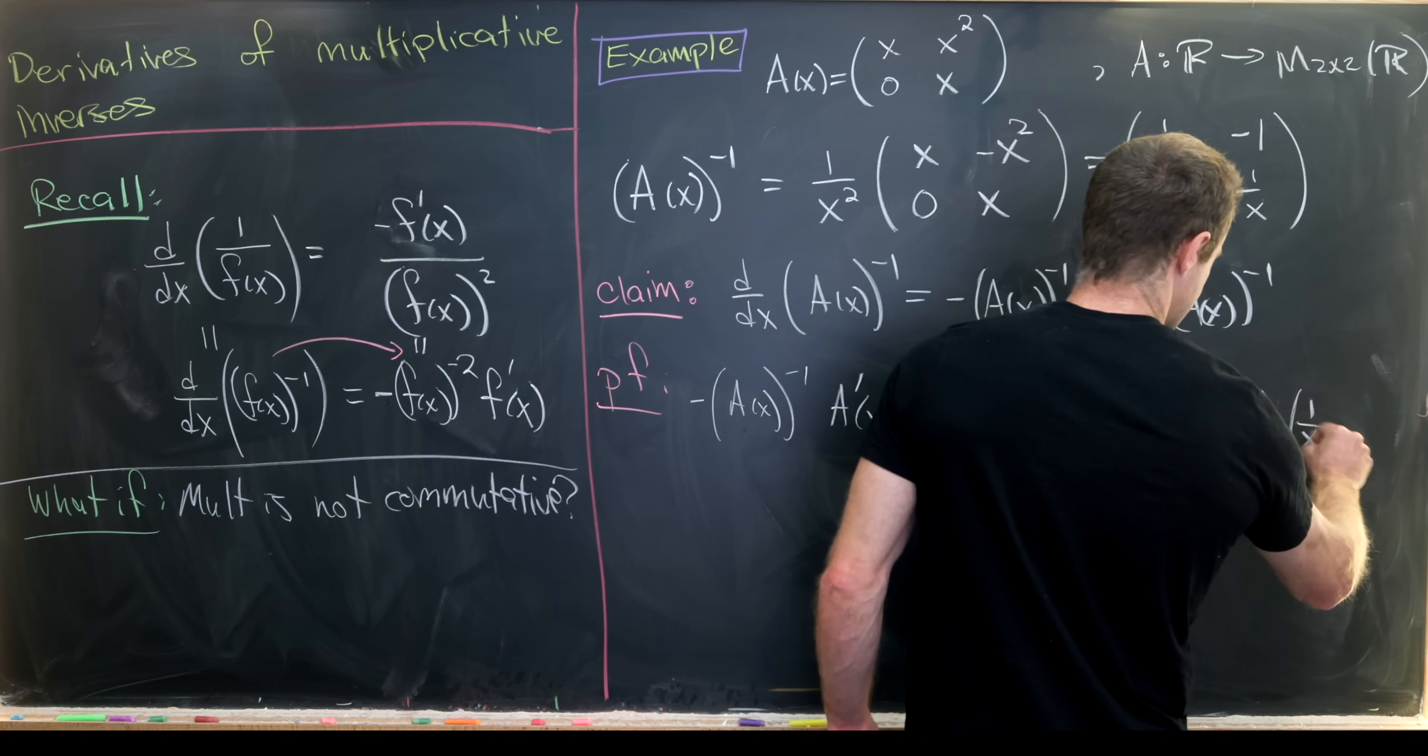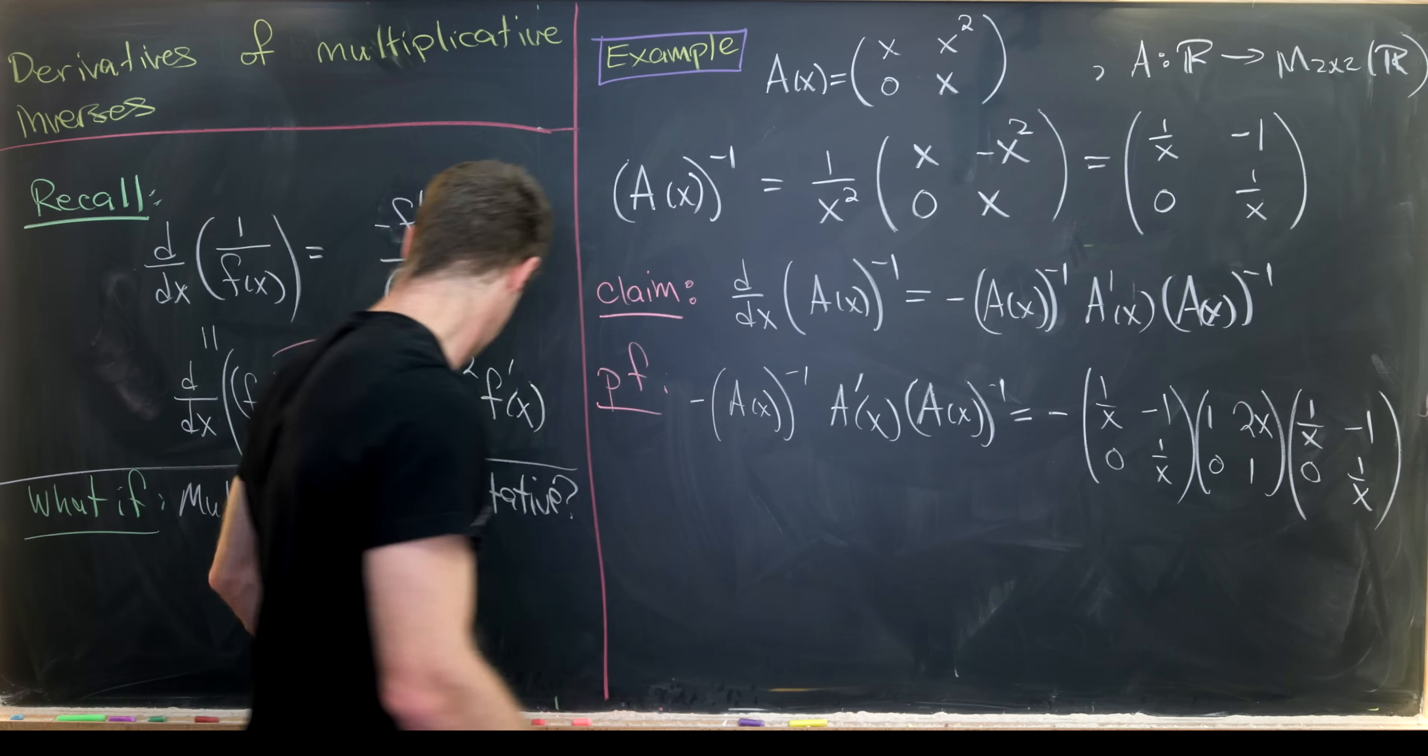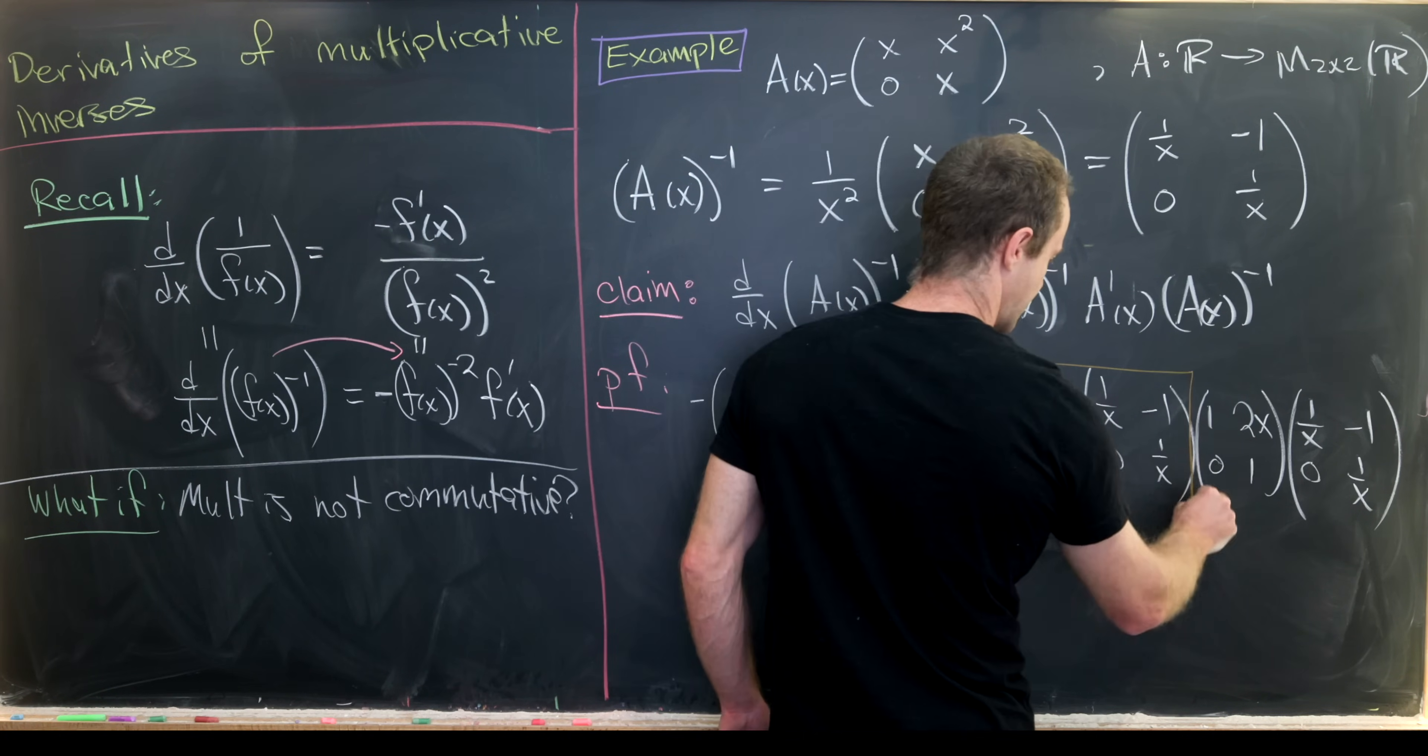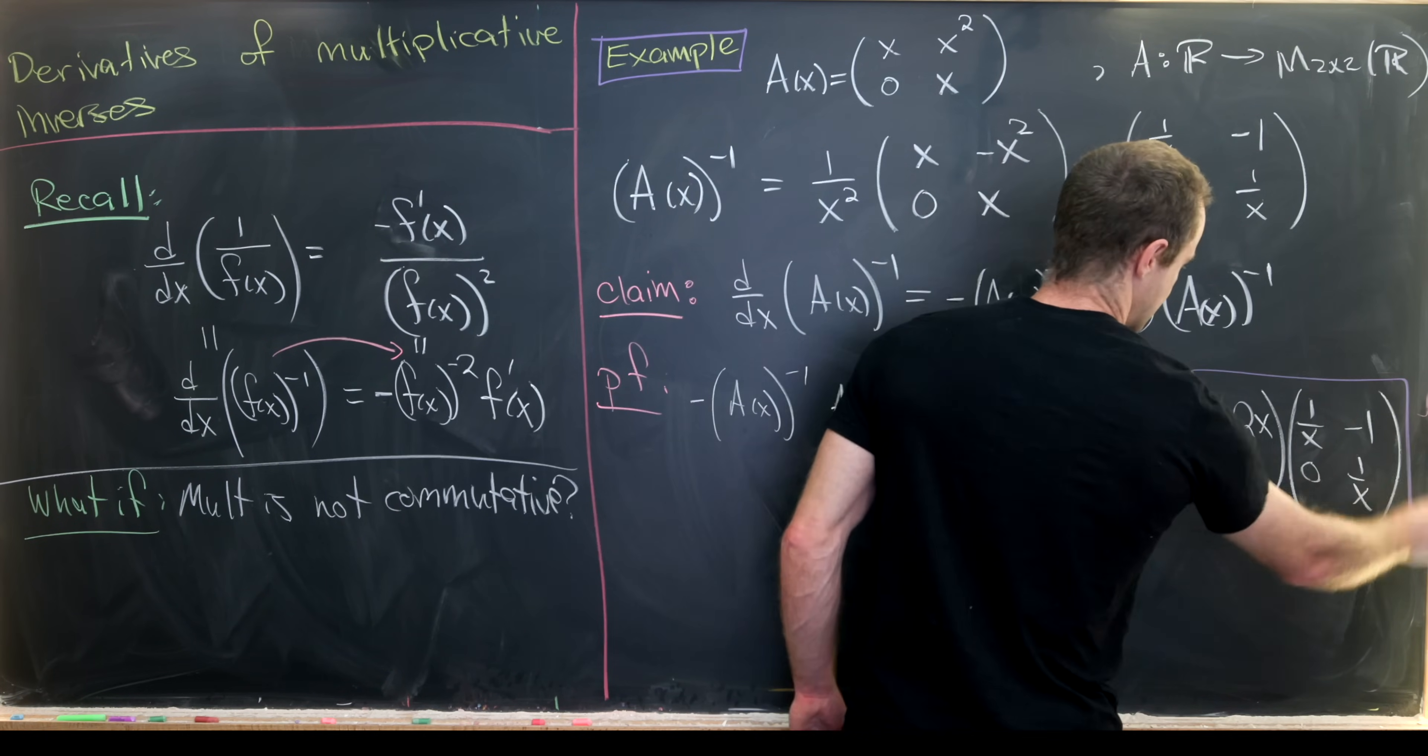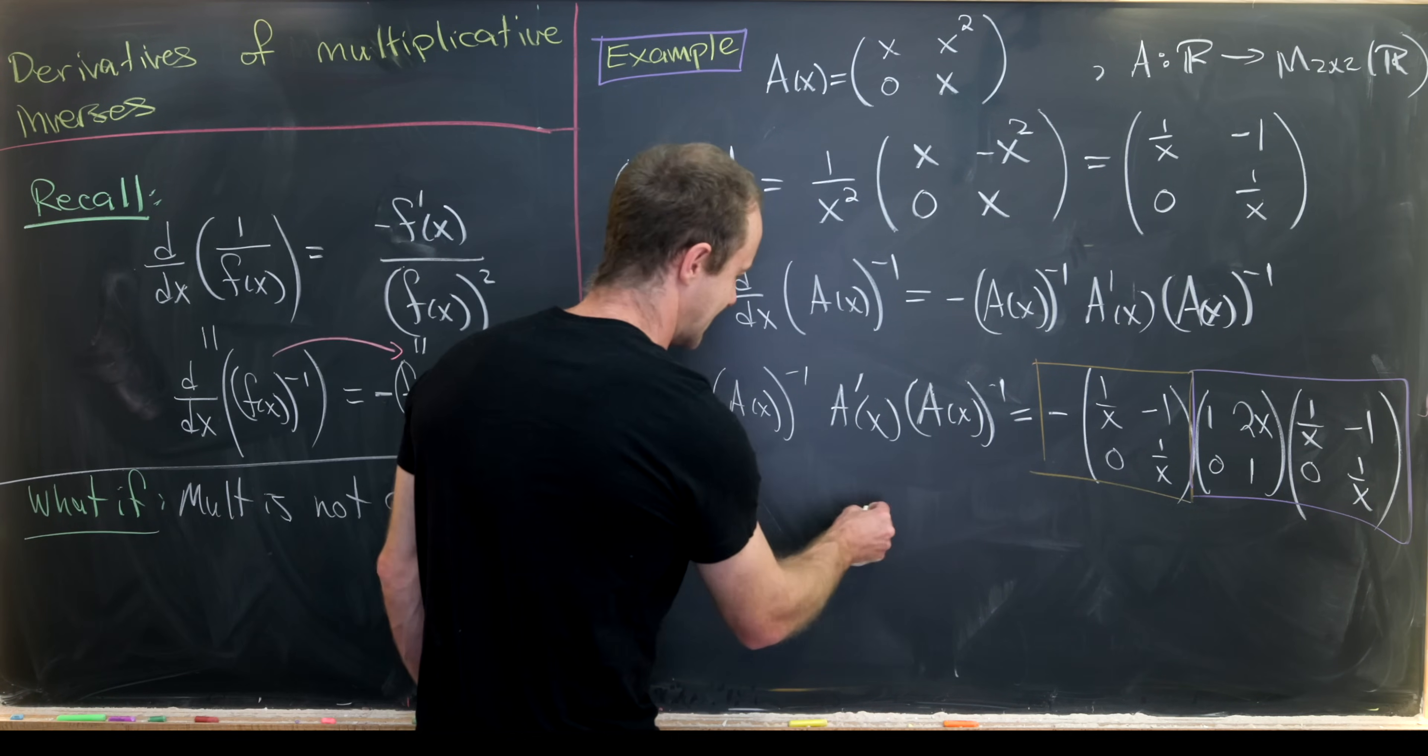And then we've got another copy of this first matrix. Now we'll group these. I'll group the minus sign with this first one, and then I'll group these last two and perform matrix multiplication or scalar multiplication as necessary.